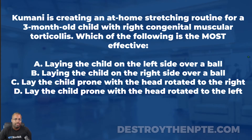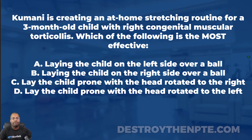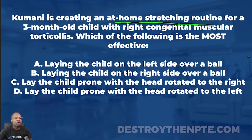Congenital muscular torticollis is definitely a common concept that comes up — you see it all the time in pediatrics in your first six months of practice. We want to make sure we understand this well and know how to treat it for the NPTE. Kamani is creating an at-home stretching routine for a three-month-old child with right congenital muscular torticollis, and I want to break down that sentence because there's a lot there.